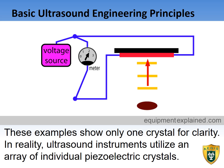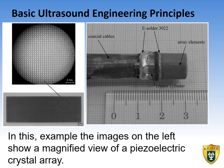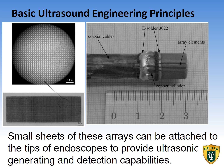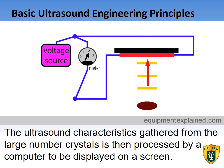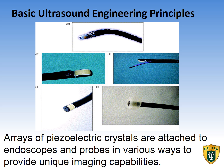These examples show only one crystal for clarity. In reality, ultrasound instruments utilize an array of individual piezoelectric crystals. The images on the left show a magnified view of a piezoelectric crystal array. Small sheets of these arrays can be attached to the tips of endoscopes to provide ultrasonic generating and detection capabilities. The ultrasound characteristics gathered from the large number of crystals is then processed by a computer to be displayed on a screen.